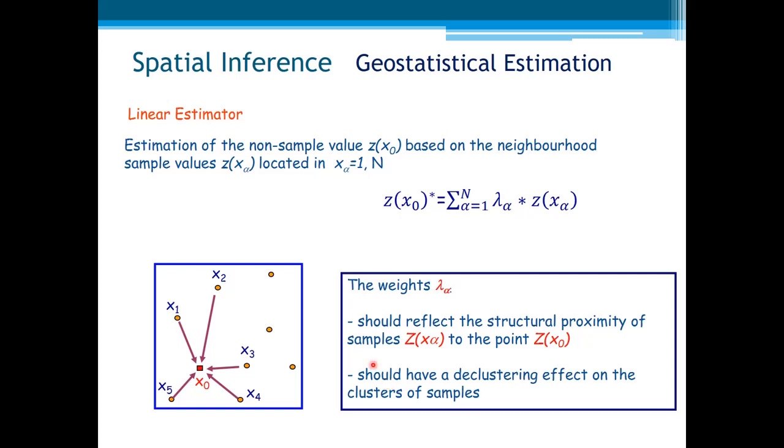Now, hence, we do have some basis to establish what we wish from a geostatistical spatial interpolator or estimator. The weights, λα, should reflect the structural proximity of the samples, z(xα), to the point z(x0). And also, at the same time, should have a declustering effect on the clusters of samples.